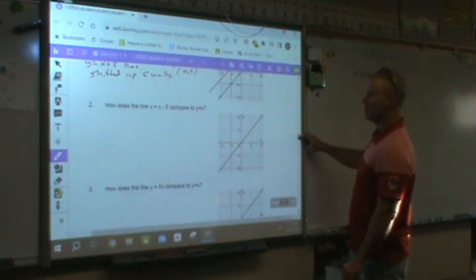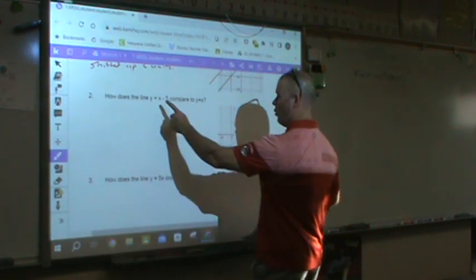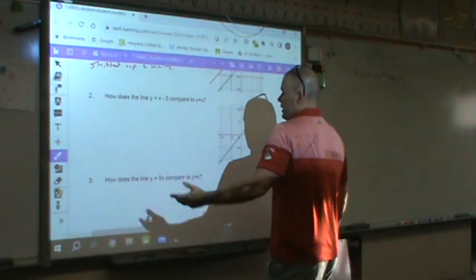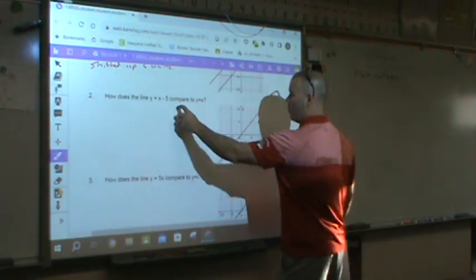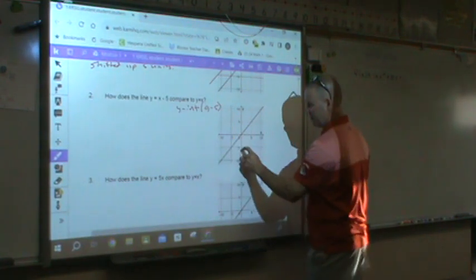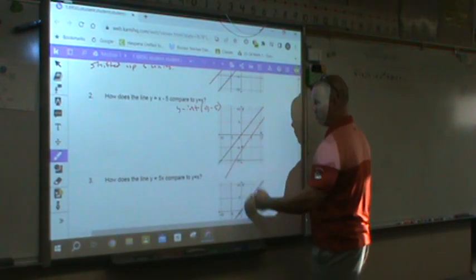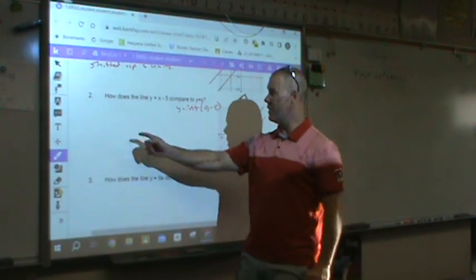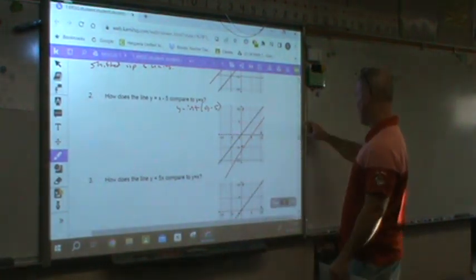So if we look at number 2, keep it simple. y equals x minus 5, what do you think is going to happen to that? My y-intercept then is going to be 0 and negative 5, so that's going to be down here. So what's happened to it? Make sure you notate that in a complete sense. It's shifted down.